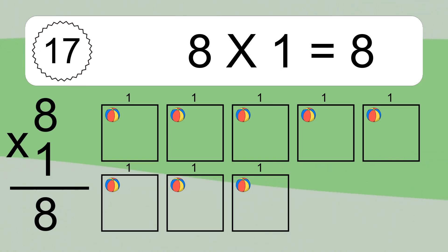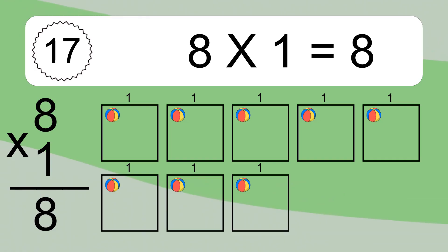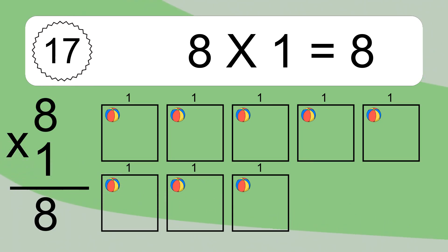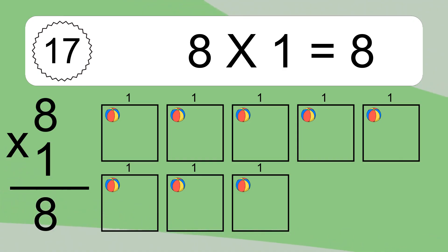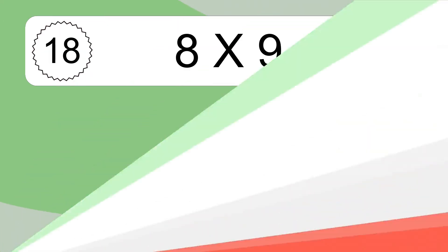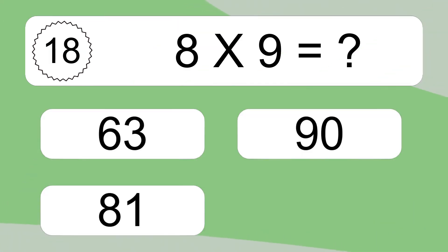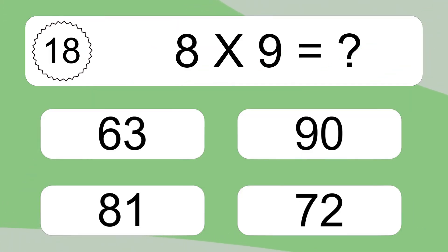We have 8 boxes, and each box has 1 colorful ball inside. If you count all the balls in all the boxes together, you will have 8 times 1 balls. This equals 8 balls.